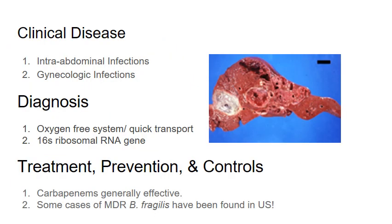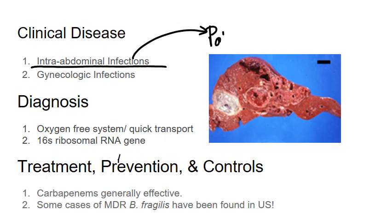So when it's in the gastrointestinal tract, totally fine. The second it leaves, big problems. This organism is actually the most common cause of intra-abdominal infections. I should note that many intra-abdominal infections are what we call polymicrobial, meaning there isn't just one agent causing disease — there are many. The reason this happens is if there's a break in the epithelial barrier of the gastrointestinal tract, numerous organisms can escape.